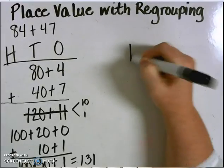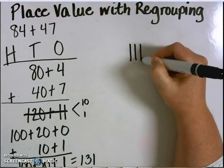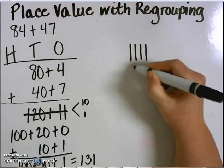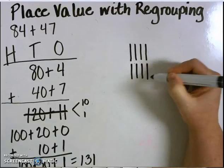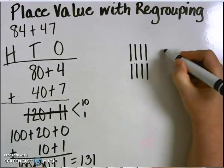One 10, two 10s, three 10s, four 10s, five 10s, six 10s, seven 10s, eight 10s, and four ones.